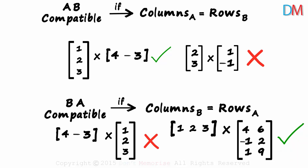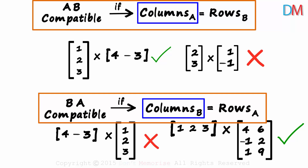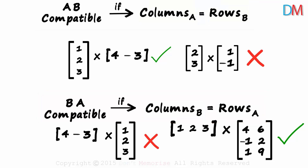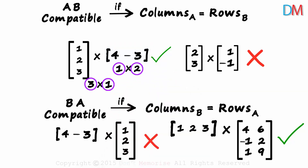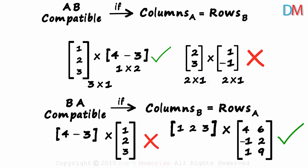Now you know that it's easy to find out if two matrices are compatible for multiplication. The number of columns in the first matrix should be equal to the number of rows in the second — only then will the multiplication be possible. A good way to find out if multiplication is possible is by writing the order of the matrices. Look at the first example: the first matrix has three rows and one column, so its order is 3 by 1. The order of the second matrix is 1 by 2. Multiplication is possible only if the second and third numbers are equal. 1 equals 1 — multiplication possible. The order of this matrix is 2 by 1 and that of this one is also 2 by 1. Here 1 is not equal to 2 — multiplication not possible.